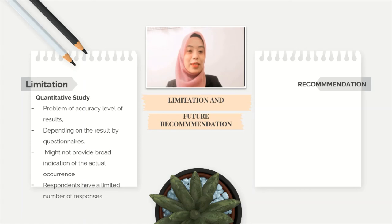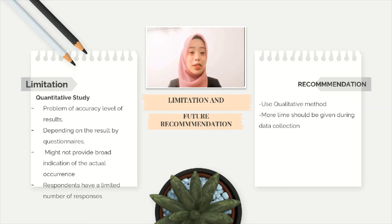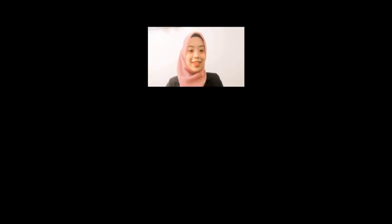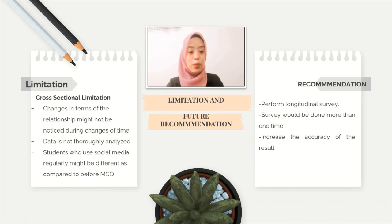The subsequent limitation relates to the quantitative study. By using the quantitative method, we faced a problem with the accuracy level of results, as we were depending on the questionnaire and respondents had limited choices of answers. Also, the questionnaire might not provide a broad indication of actual occurrences. We suggest future researchers use a qualitative method, though they would need more time compared to a quantitative study. The next limitation is the cross-sectional limitation, where changes in the relationship might not be noticed over time, and data was not thoroughly analysed. We suggest future researchers perform a longitudinal survey, done more than one time, to increase accuracy of results.